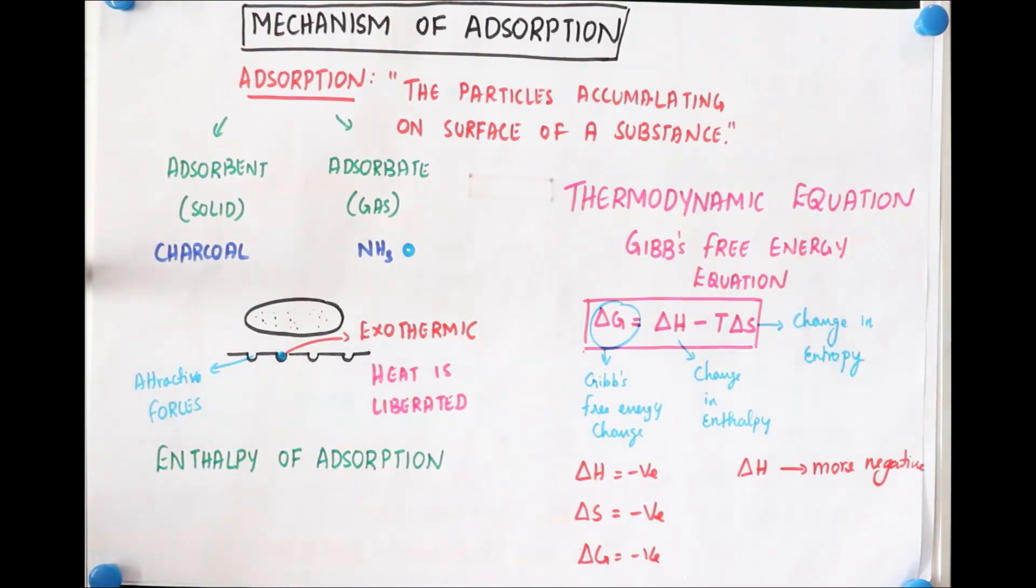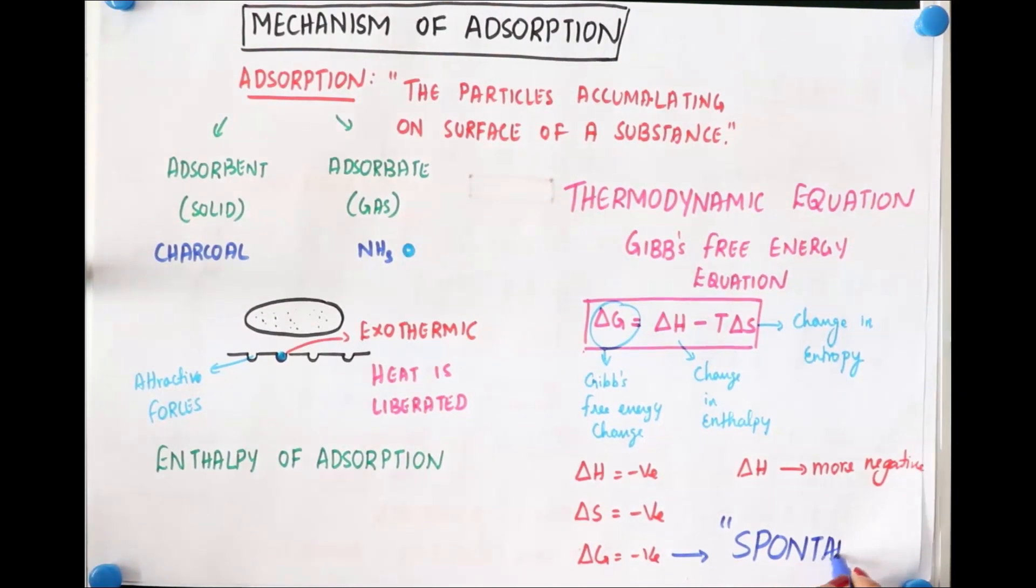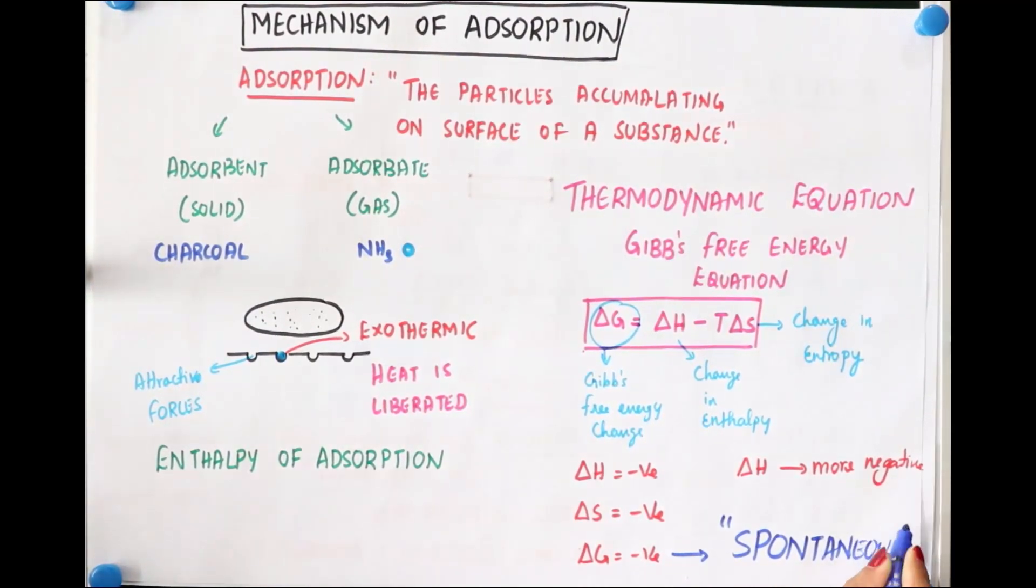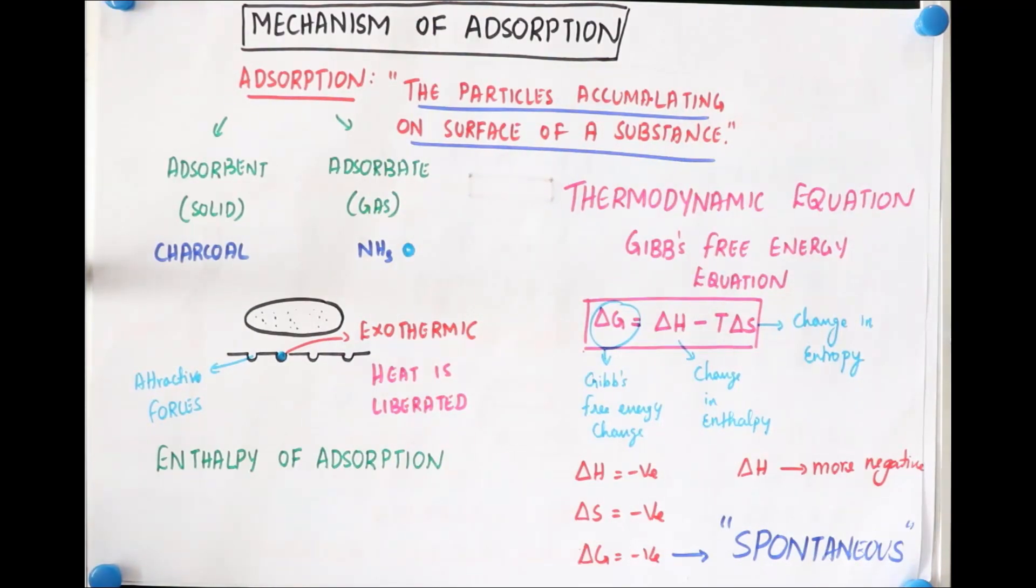And if delta G is negative, so we call this reaction spontaneous. Yes, so this becomes spontaneous. Oh, that's why it happens all by itself. Yes. So this is how the adsorption takes place. Adsorption basically happens because of these attractive forces which could be either due to a physical origin or due to some chemical origin. The reaction becomes exothermic, and that's why we have thermodynamic equations.